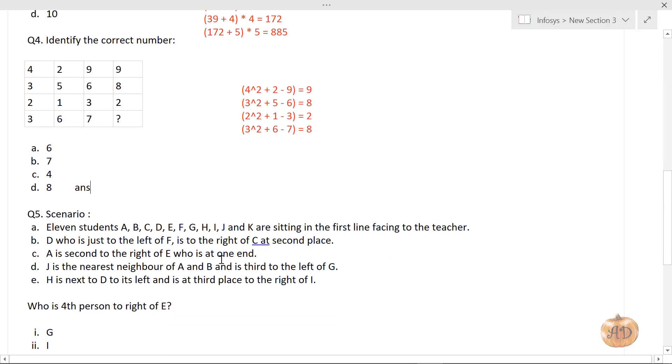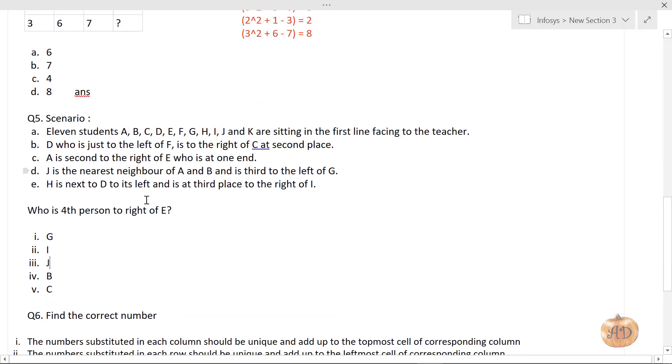Let's move to the second puzzle question. This is a seating arrangement. We have a scenario: 11 students A, B, C, D, E, F, G, H, I, J, and K are sitting in the first line facing the teacher. They're facing the same direction. Let me write positions 1 through 11. Now let's move to point B.